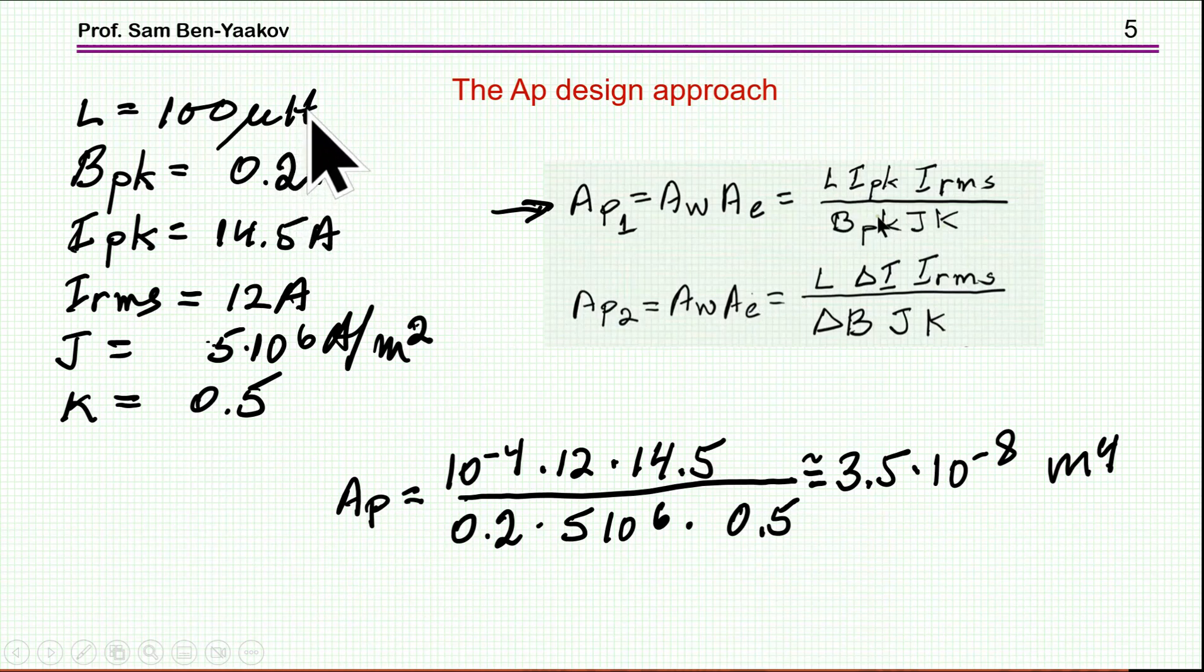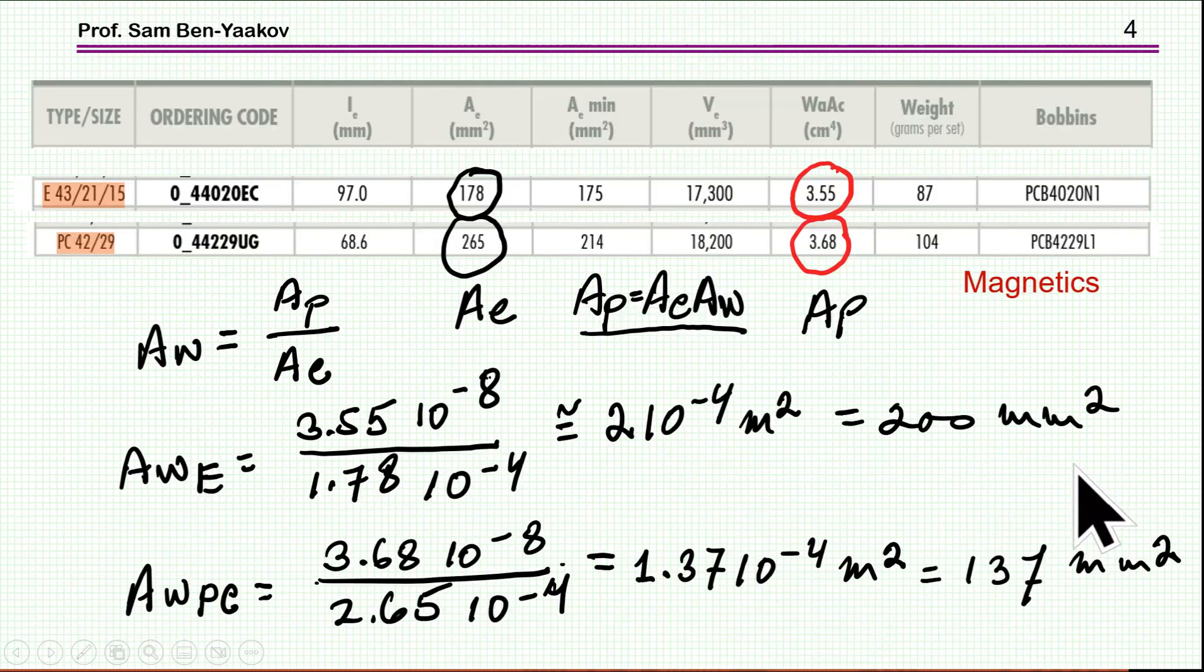I've chosen here an arbitrary set of specifications, so we'll have some numbers to work with. An inductance of 100 microhenry, B peak of 0.2 Tesla, I peak 14.5, and RMS of 12 amp, J 5×10^6 amp per meter square, which is 5 amp per millimeter square. And then we have here K of 0.5, in case we like to have Litz wire or something like that. So I've sort of relaxed this parameter.